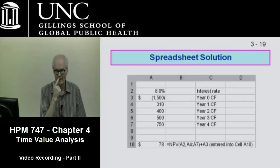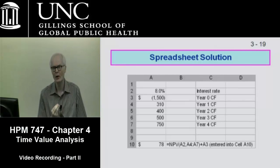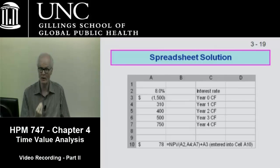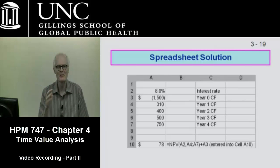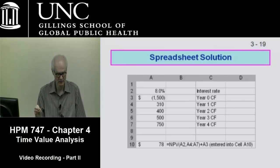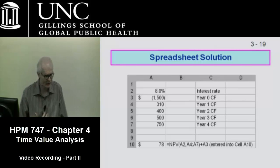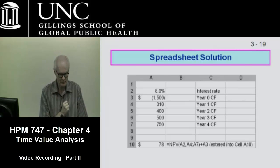Why is the initial investment added outside the formula? Because when Excel's NPV formula was written, it was designed so that the first discounted cash flow is in year one — it doesn't account for a cash outflow in today's dollars at year zero. So remember: the NPV formula requires you to put the initial investment on the outside. We're discounting the cash flows of 310 to 750 in cells A4 through A7, then adding the negative 1,500 to get $78.